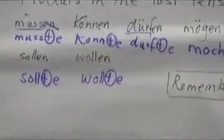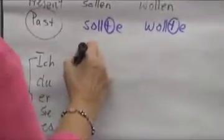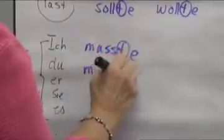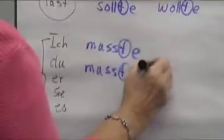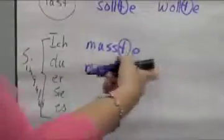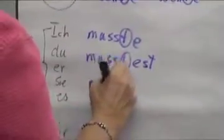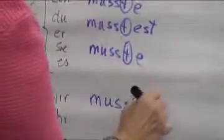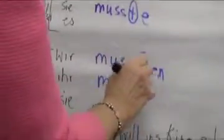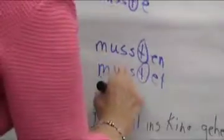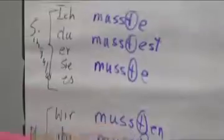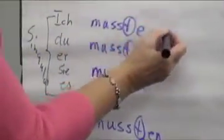Now let's see how the conjugation looks. I'm going to take müssen. Ich musste — no umlaut, remember. Du musstest — t to the stem, and we insert an e after t, so the du ending is est, as we learned already. Er/sie/es musste. Wir mussten. Ihr musstet. And sie mussten. This is the conjugation. As you notice: no umlauts, t all the way through added to the stem, and then the personal endings. And you notice for ich and er/sie/es, the personal ending is e. The rest of the endings are like you learned already.